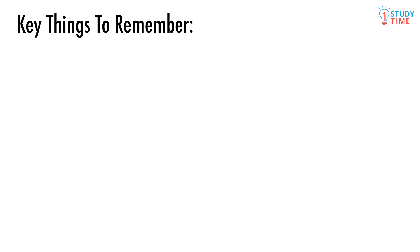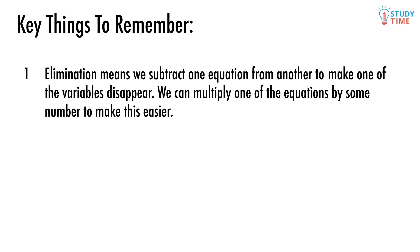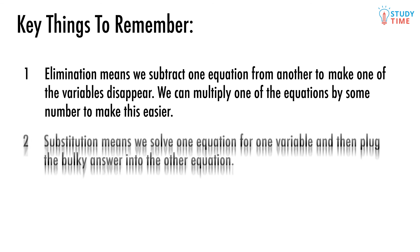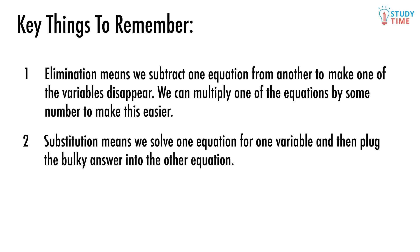Remember, elimination means we subtract one equation from another to make one of the variables disappear. We can multiply one of the equations by some number to make this easier. Substitution means we solve one equation for one variable and then plug the bulky answer into the other equation to solve for the other variable. Easy peasy.